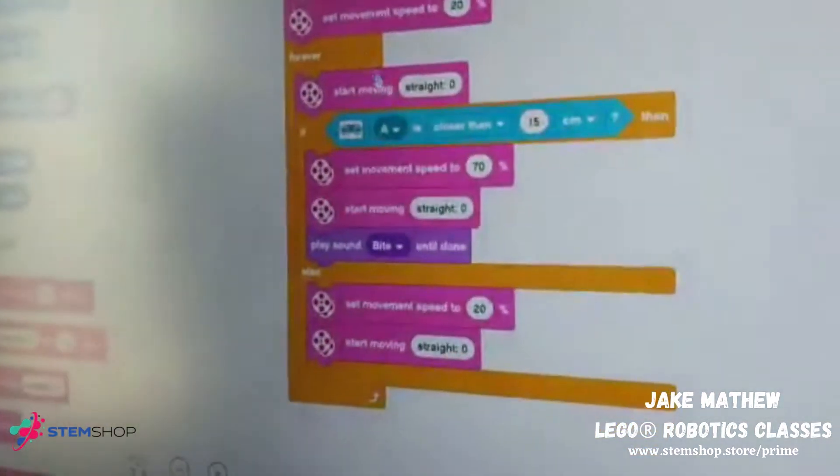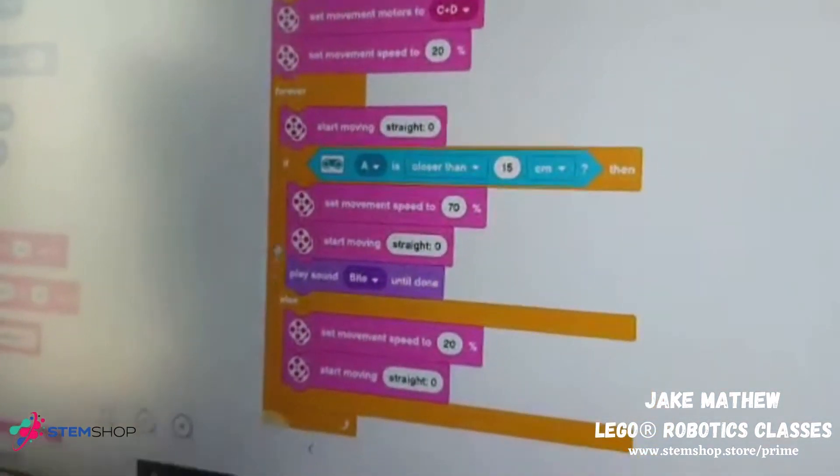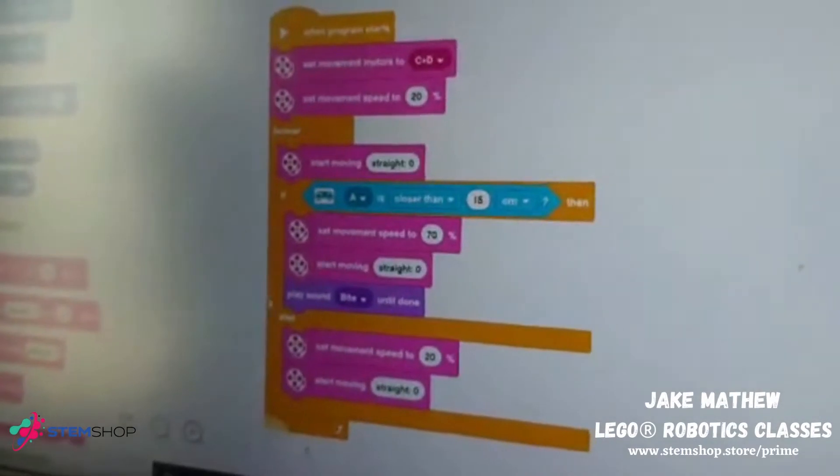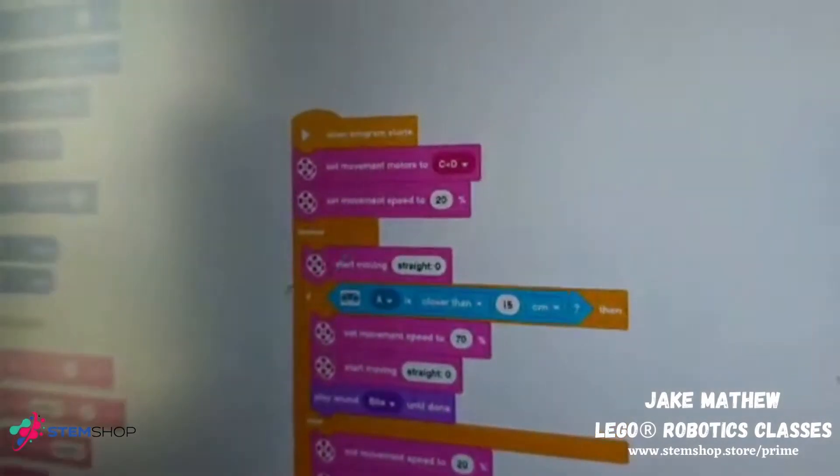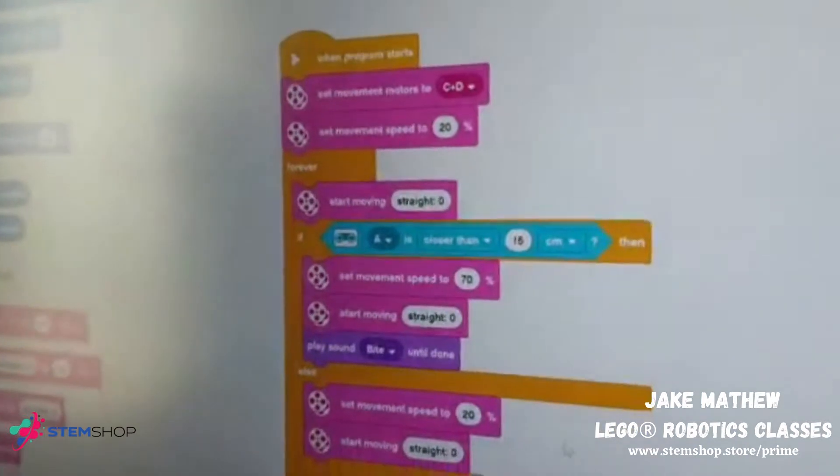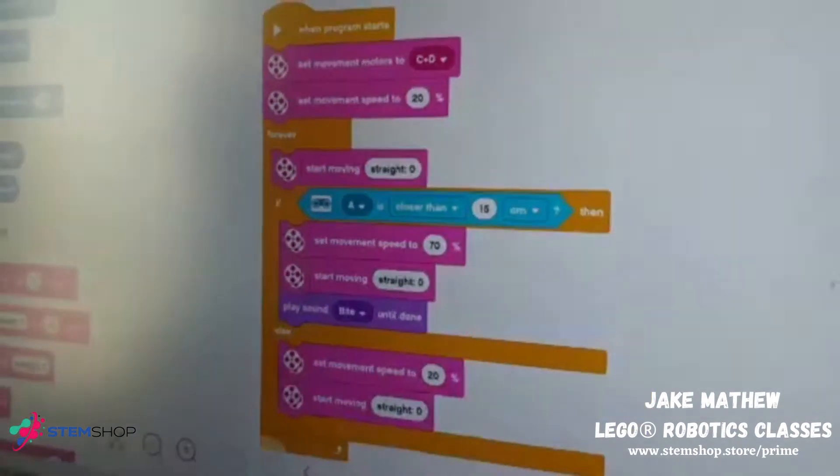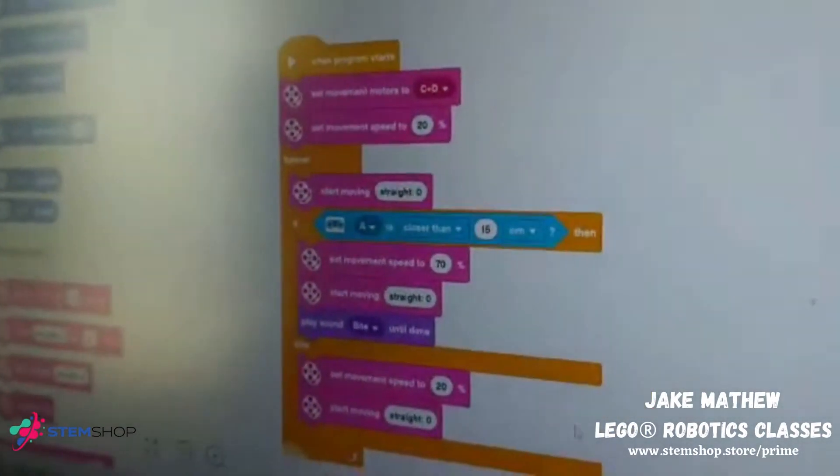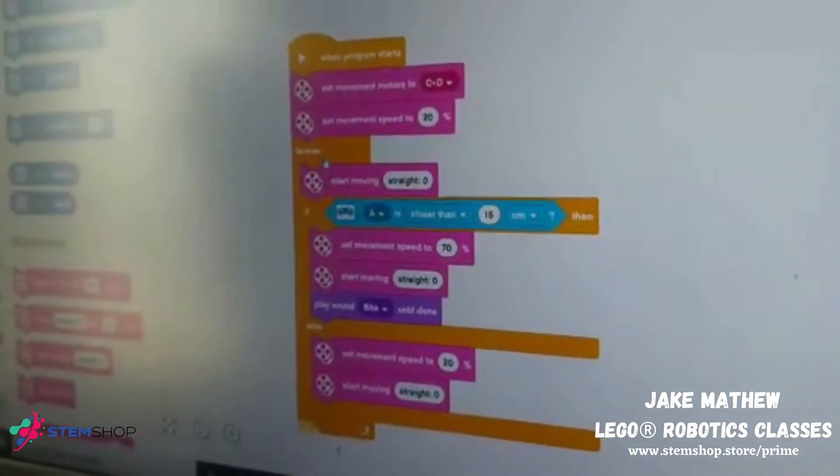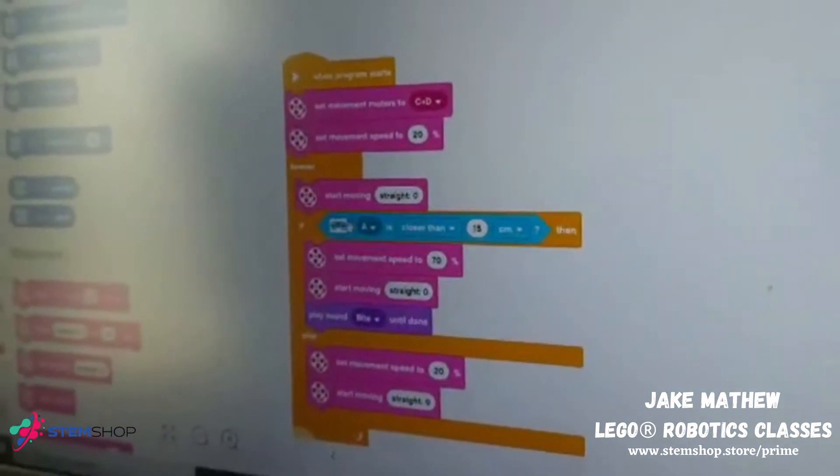So, the next one is forever. First, we need to put the forever block. The forever block gives like, it goes forever. If you wanted to stop, here there's a stop button. Then, next, after we put the forever block...